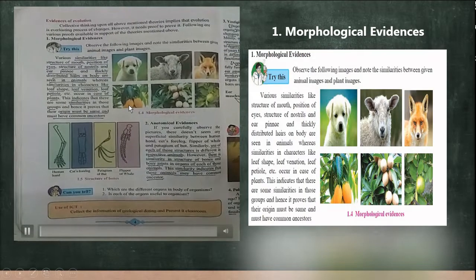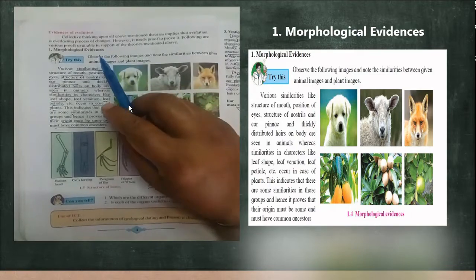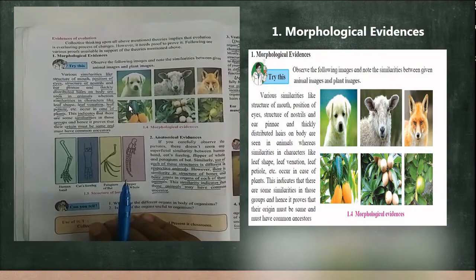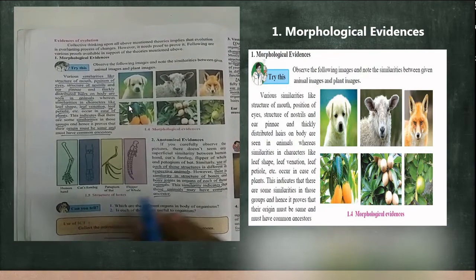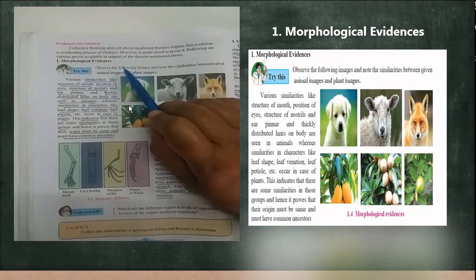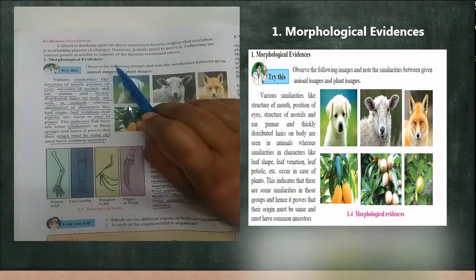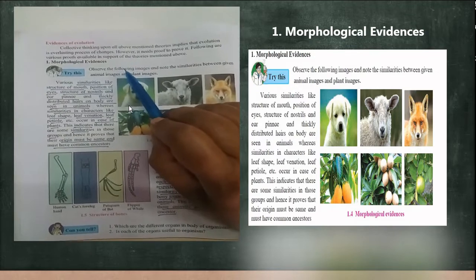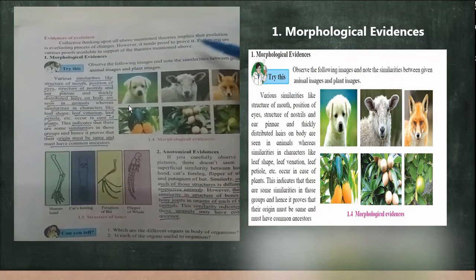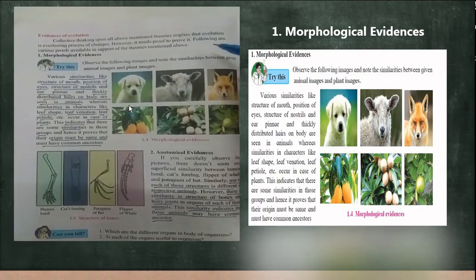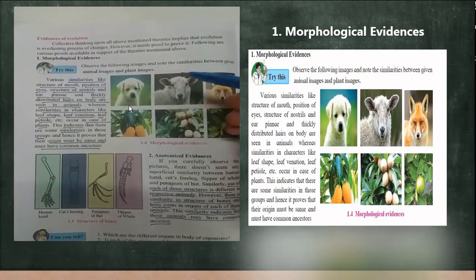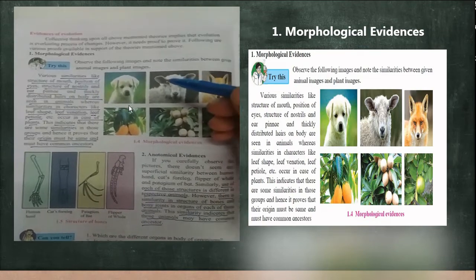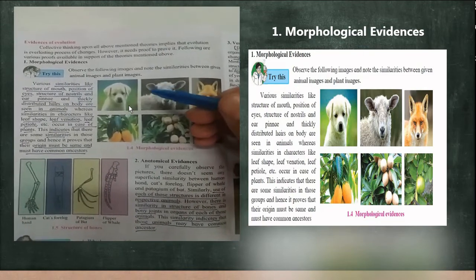Good morning friends. Today we will discuss the evidences of evolution. Yesterday we saw that evolution is an everlasting process — a gradual change in the structure and functional organization of an animal. Now, how do we say that? There should be some proof to support the theory of evolution. Here we are going to see six evidences which support the theory of evolution.